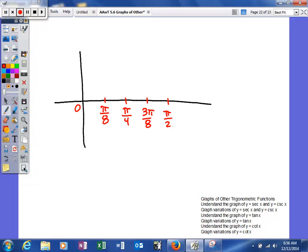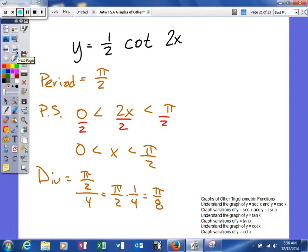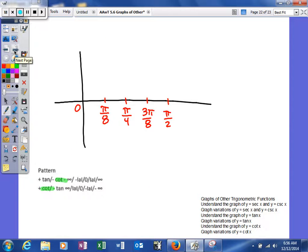Now we need to look at the pattern. So here's our pattern, and what we're trying to graph is negative cotangent. Whoops, I meant to make it negative. Let's go ahead and make it negative right now, changing the problem a little bit. So negative cotangent is going to go: negative infinity, negative absolute value of a, zero, absolute value of a, positive infinity.